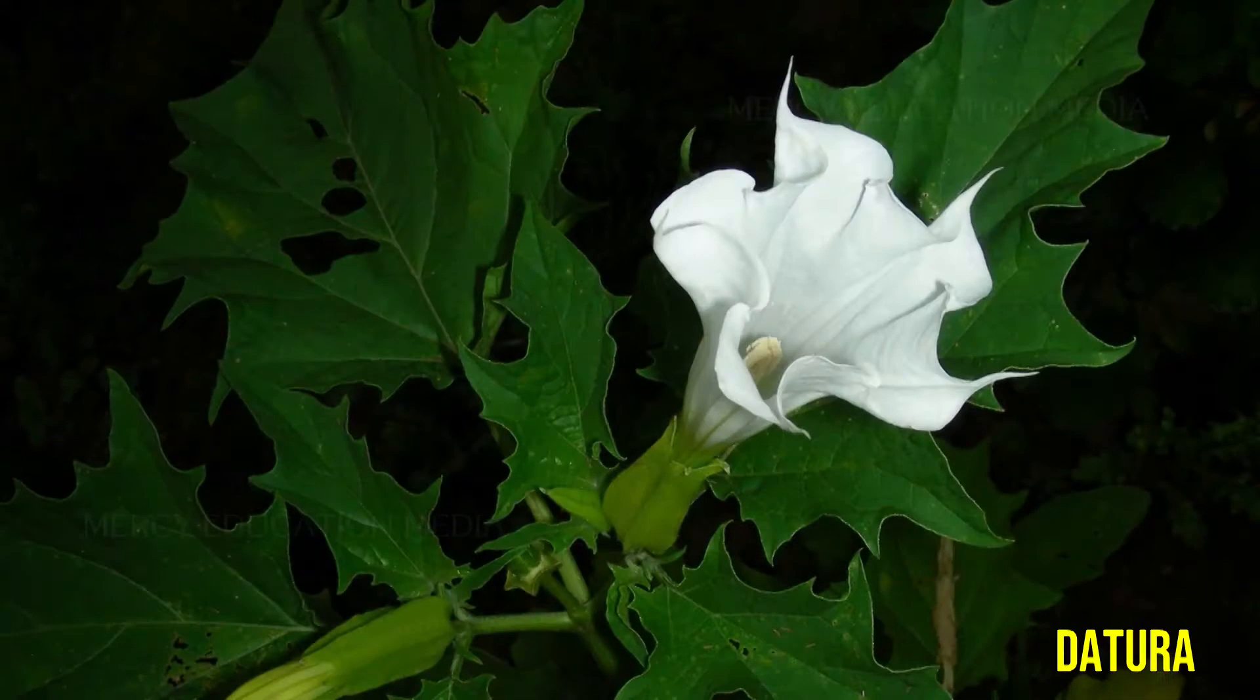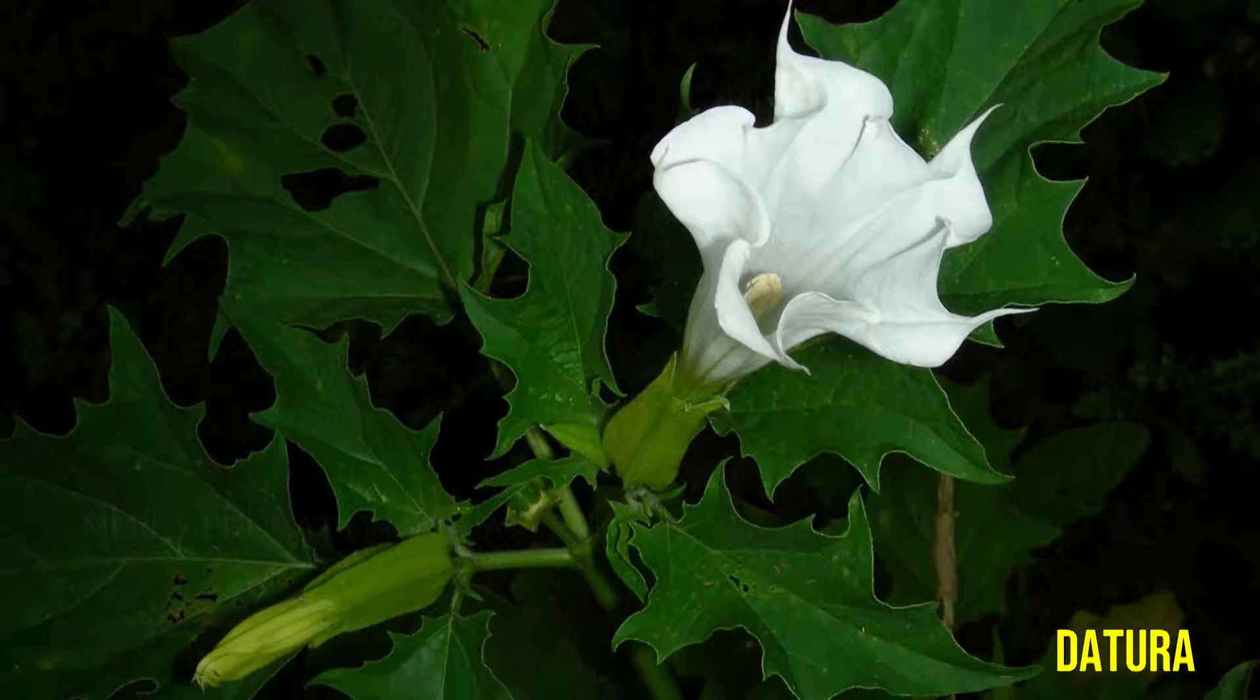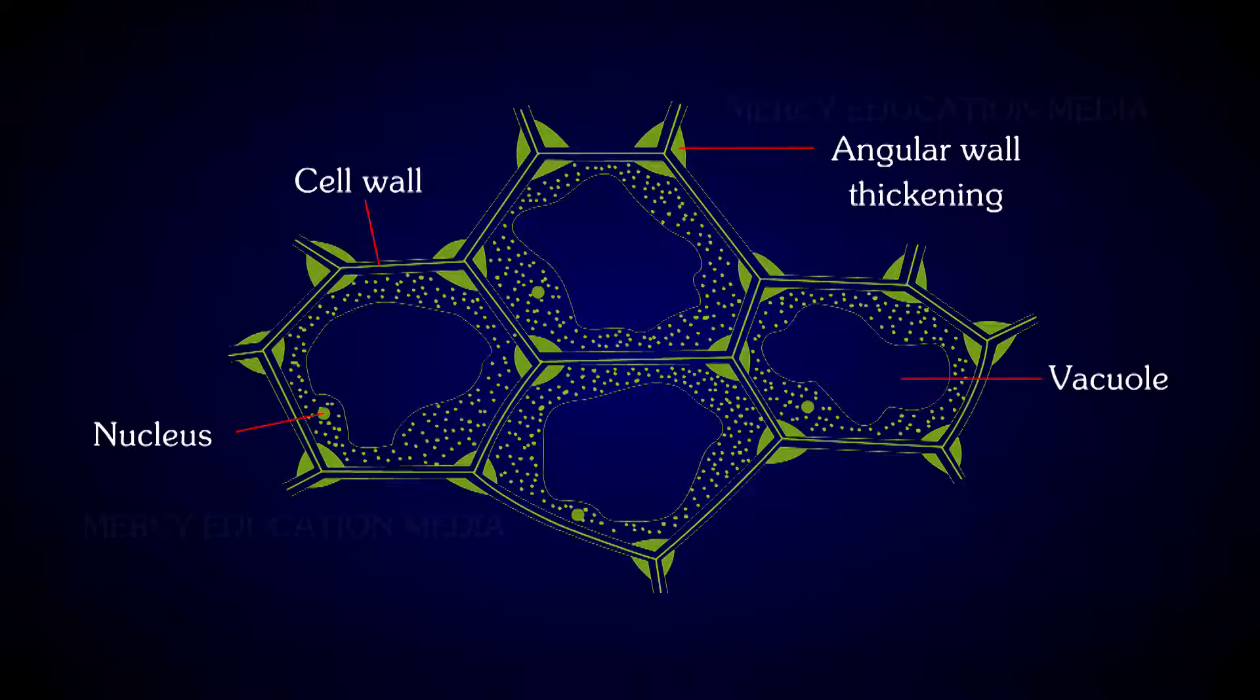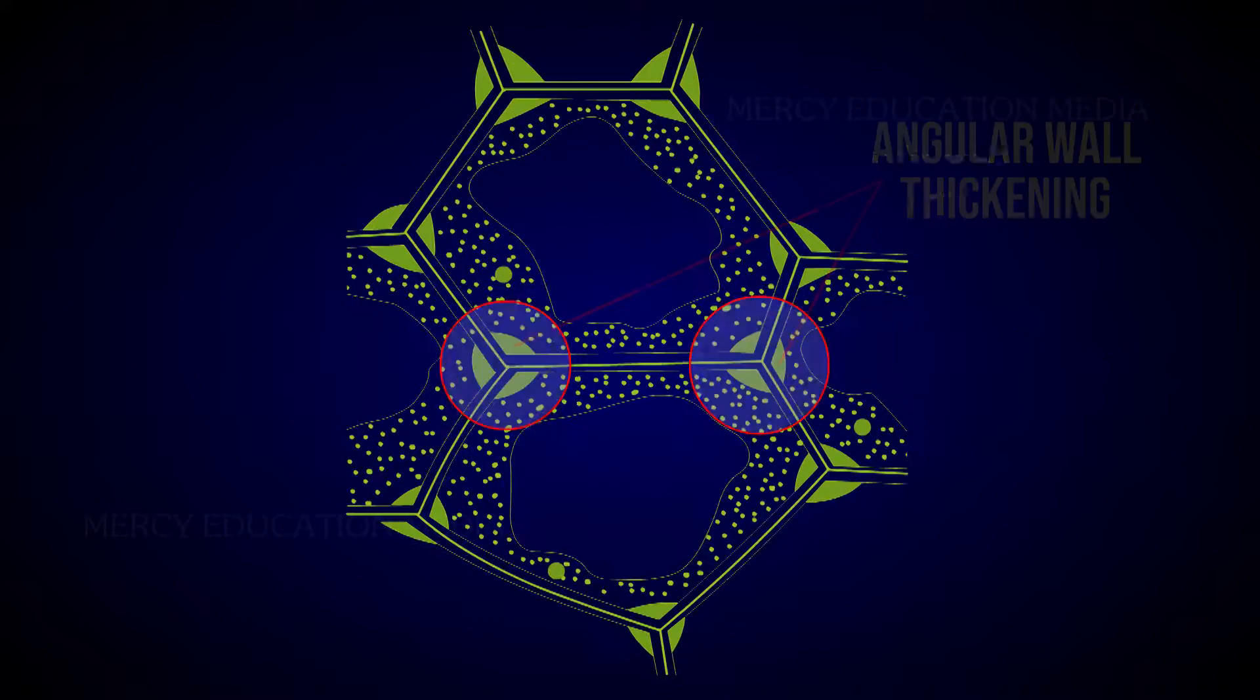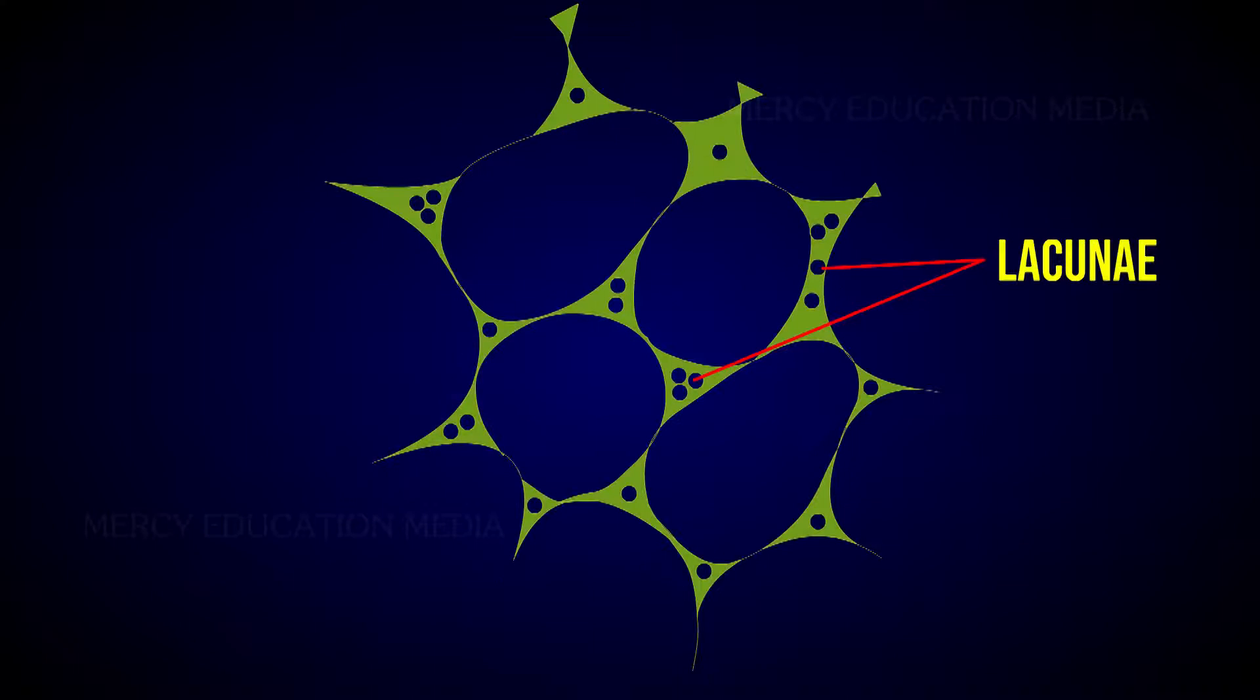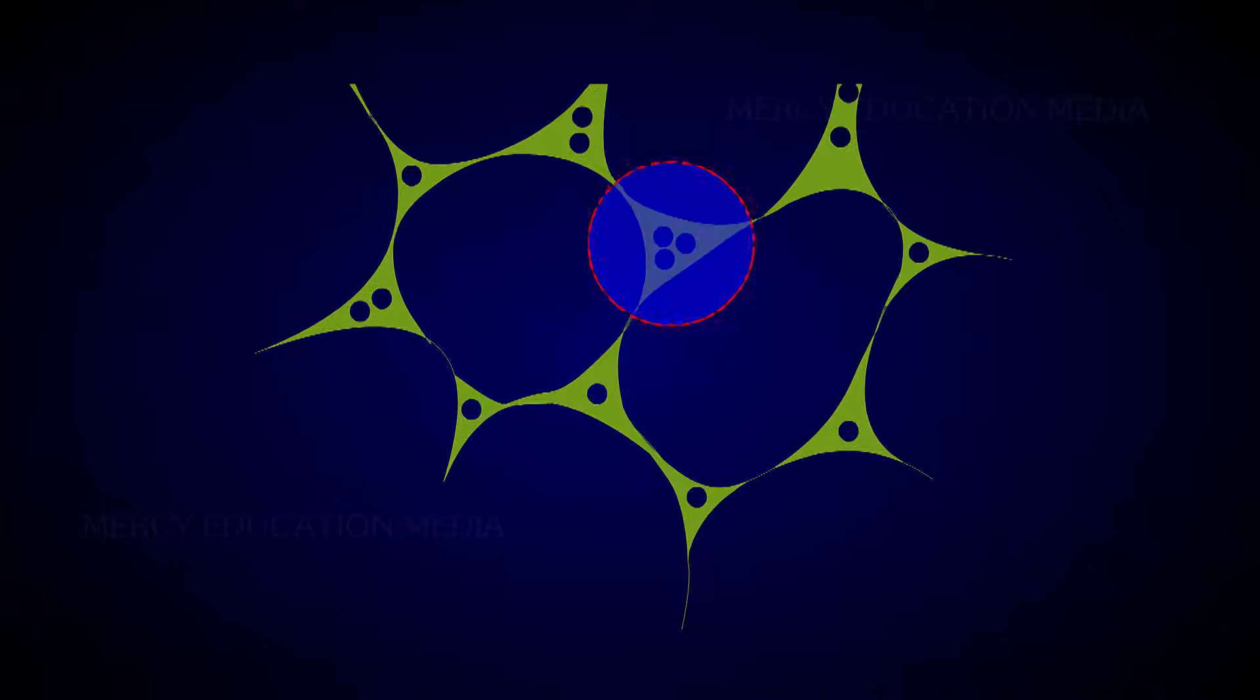In the hypodermis of Datura and Nicotiana, the cell walls of collenchyma are thickened at their angles. This type is called angular collenchyma. In the hypodermis of Ipomoea, the cell wall thickening materials are deposited on the walls bordering the intercellular spaces.